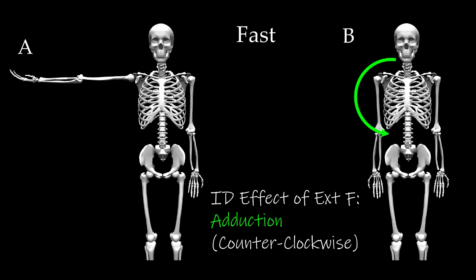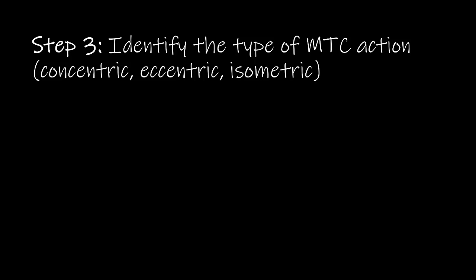For Step 3, we identify the type of MTC action — whether concentric, eccentric, or isometric. To assist us, we will look at a decision flow chart. First, we identify the joint motion and the effect of the external force. Then we ask ourselves a question about the movement direction — that is, how is the joint motion occurring with respect to the external force?